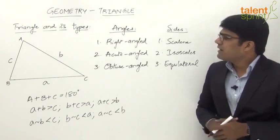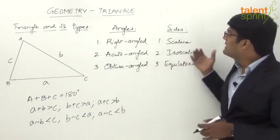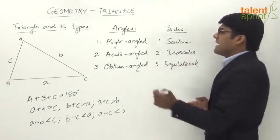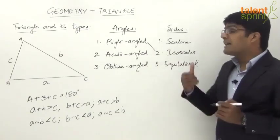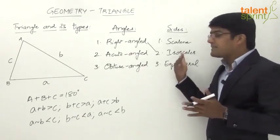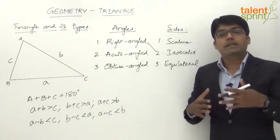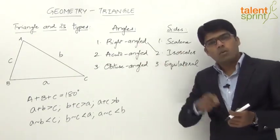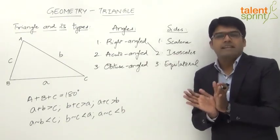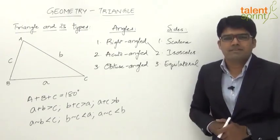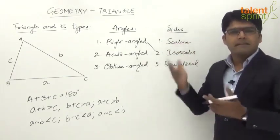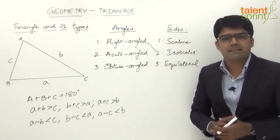That covers the classification of triangles based on angles and sides. There can also be special cases — for example, a right-angled isosceles triangle, which has one angle of 90 degrees and the two sides that include that 90-degree angle are equal. Generally, a right-angled scalene triangle has three different sides but one angle is 90 degrees.